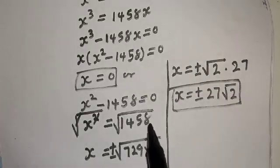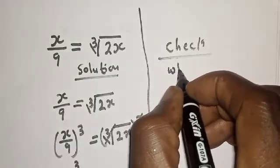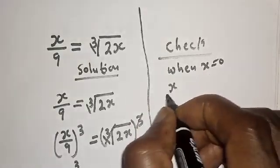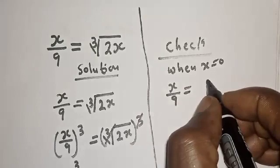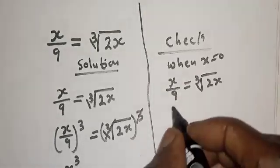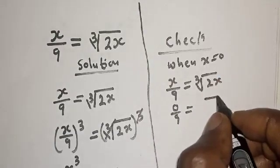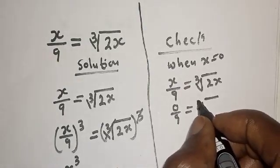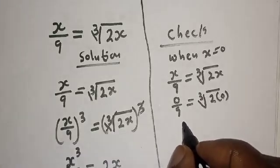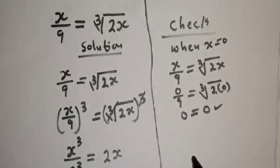We can check to confirm if our answer is right or wrong. Let's check. When x is equal to 0, we have x over 9 is equal to the cube root of 2x. When x is 0, we have 0 over 9 is equal to the cube root of 2 multiplied by 0. Therefore, the left-hand side is 0, which equals the right-hand side 0, which satisfies the given equation.